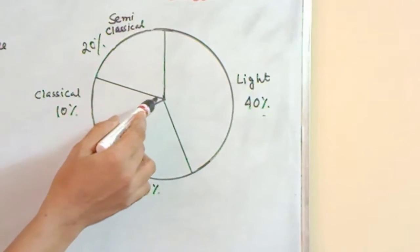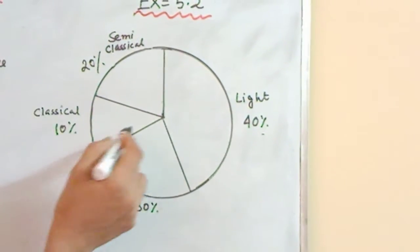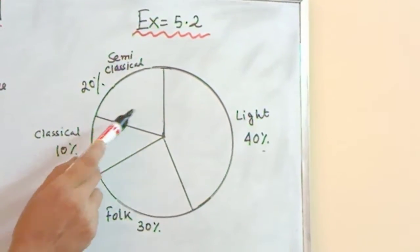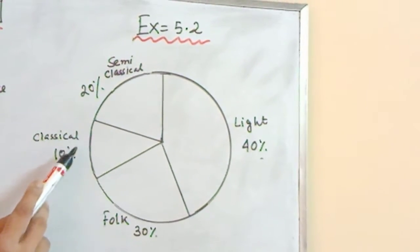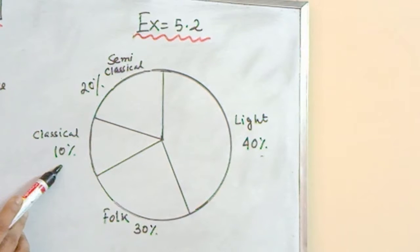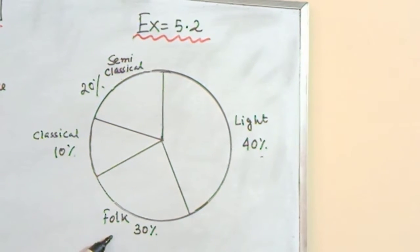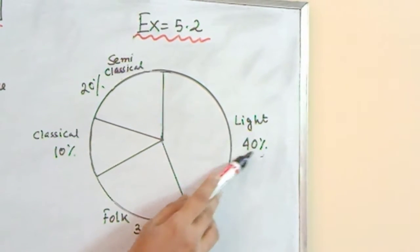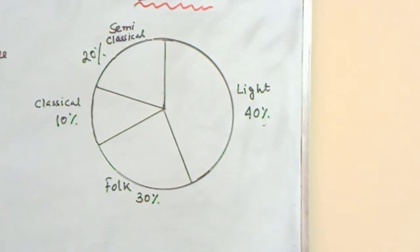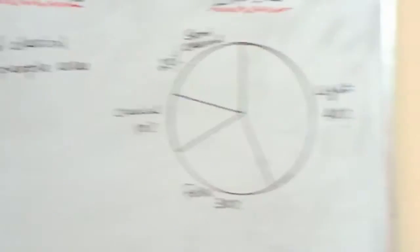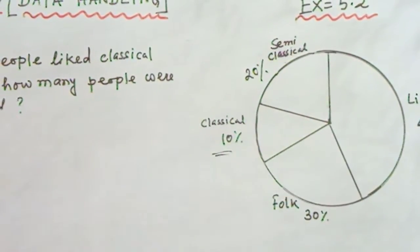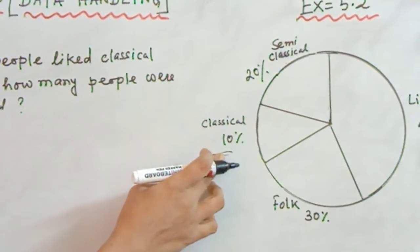One pie chart is given in question number 1, exercise 5.2. Some young people have been surveyed and after this survey, the report is 20% people like semi-classical, 10% people like classical music, 30% people like folk music, and light music 40%. By seeing this, you have to read this pie chart and give the answer to the following questions. 20 people like classical music. You can see that 10%, whatever the number of people has been surveyed, out of them 10% like classical music. That means 10% of that particular number is 20.